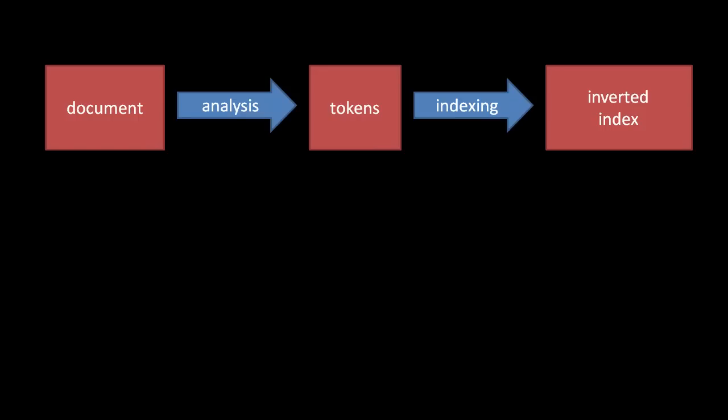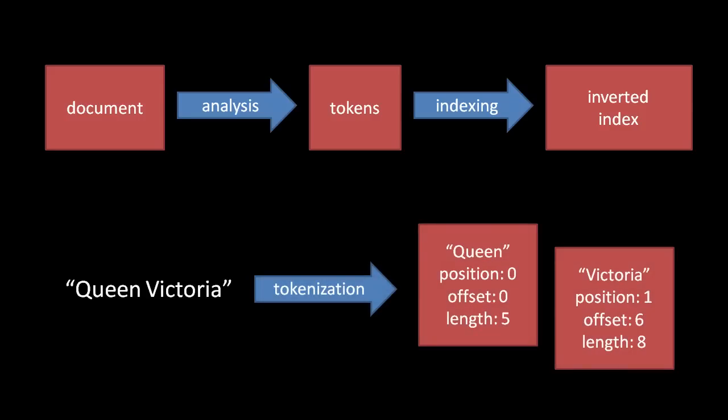For example, if we tokenize the text Queen Victoria by simply splitting along whitespace, the first token is Queen at position 0, because it's the first token, offset 0, because its first character is the first character in the whole text, and with length 5, because Queen has 5 characters. The second token would be Victoria at position 1, because it's the second token, offset 6, because its first character is the 7th character in the whole text, and with length 8, because Victoria has 8 characters.